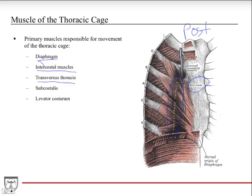This muscle doesn't have a major function. Muscles contract and shorten, so they just kind of depress the ribs a little bit and help decrease the area of the thoracic cage, but not much of a major function. You also have the subcostalis muscles.